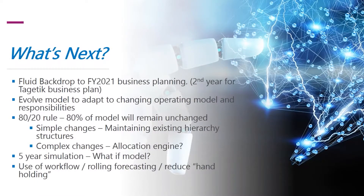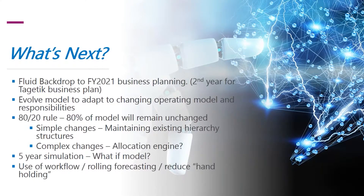What's next? We have a fluid backdrop to the FY 2021 business planning — it's our second year using TGETIC. We're well set up to use the tool with remote office working in response to COVID-19. We're able to evolve the model to adapt to changing operating models and responsibilities. Using an 80-20 rule, we're going to keep most of our budgeting the same this year and just change and tweak a few things — mainly using our own internal skills, but also with some additional support where required.